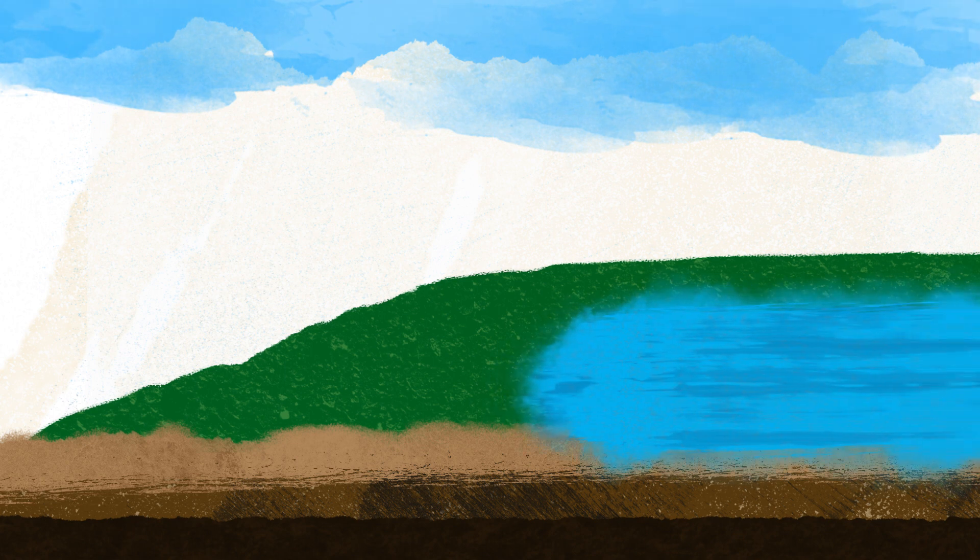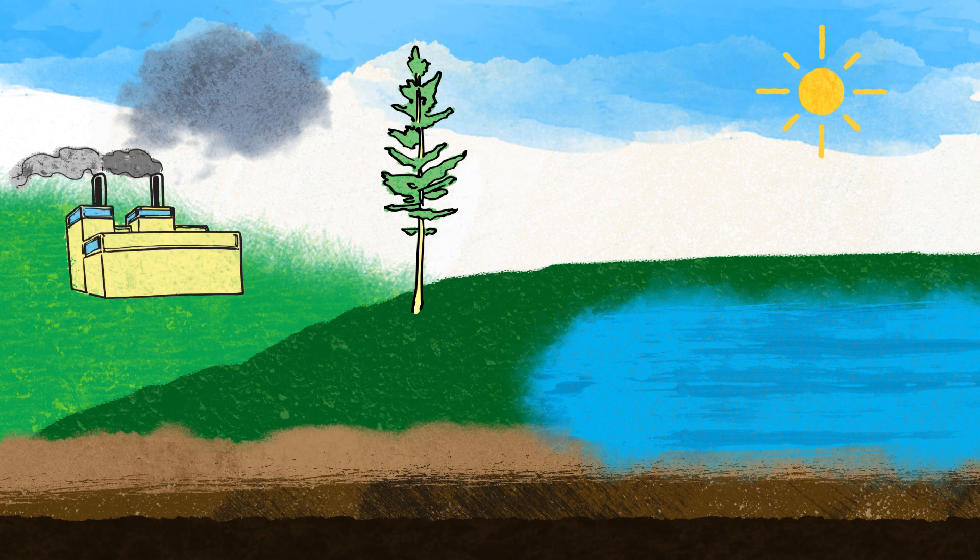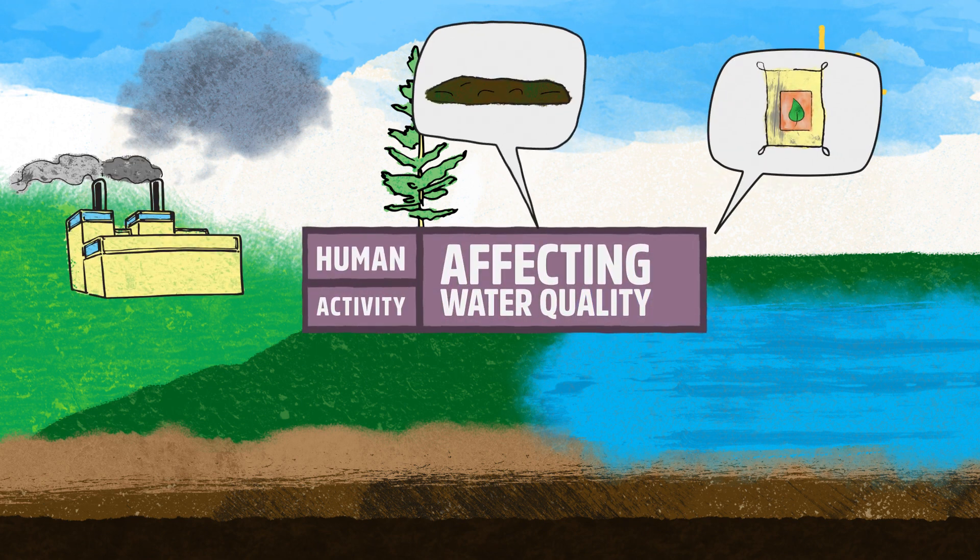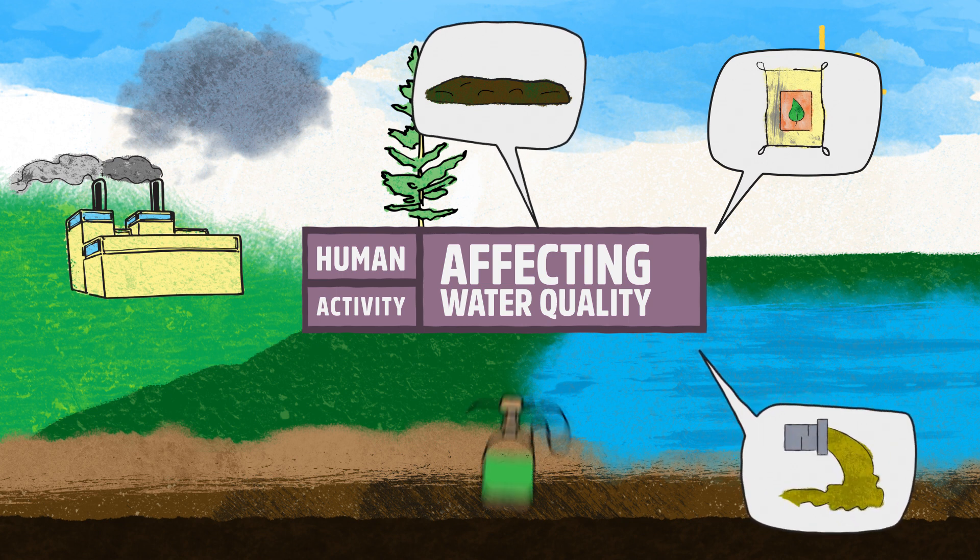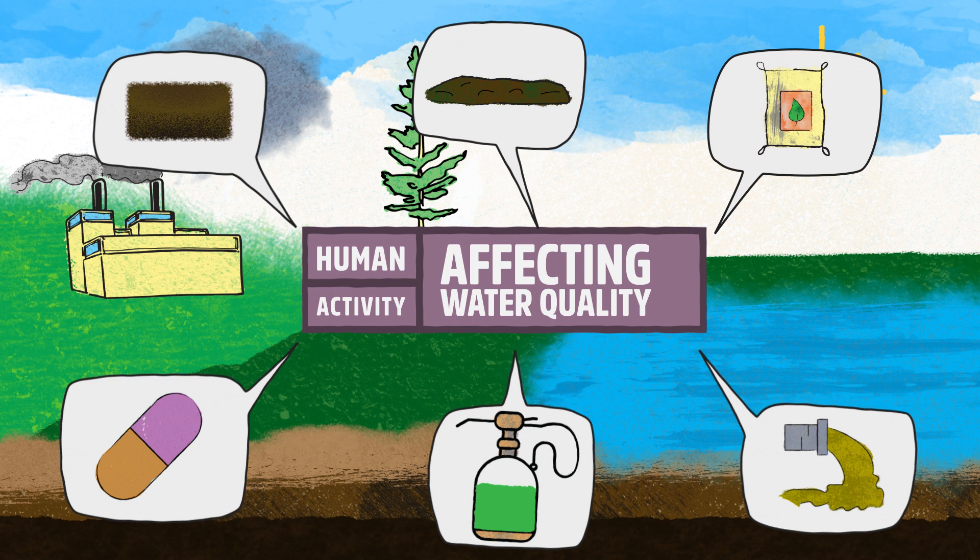Surface water quality varies across Alberta and is affected by vegetation, topography and climate but also by human activities. Manure, fertilizers, sewage, pesticides, pharmaceuticals and sediment all affect water quality.